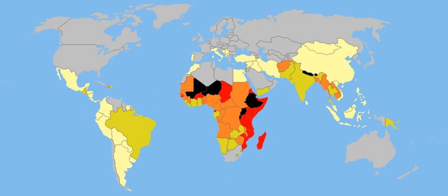UNICEF defines child labour differently. A child, suggests UNICEF, is involved in child labour activities if between 5 and 11 years of age, he or she did at least 1 hour of economic activity or at least 28 hours of domestic work in a week, and in case of children between 12 and 14 years of age, he or she did at least 14 hours of economic activity or at least 42 hours of economic activity and domestic work per week.